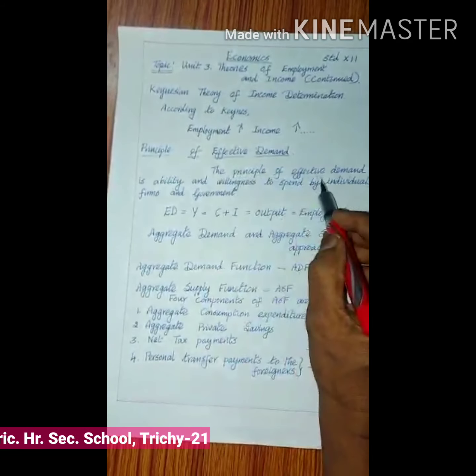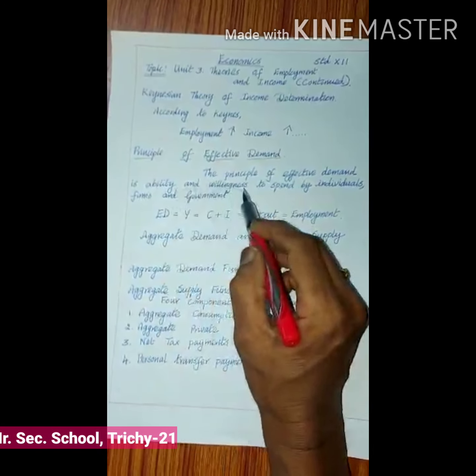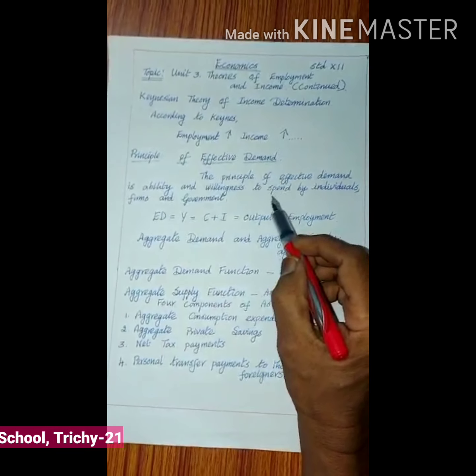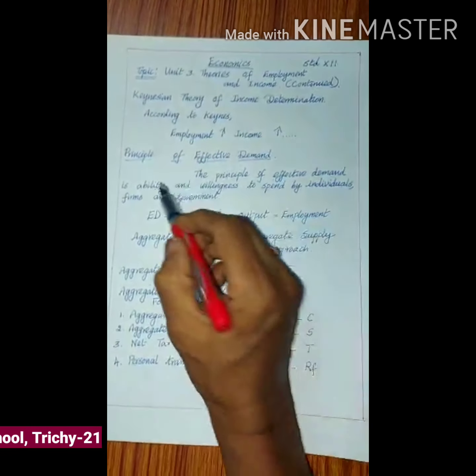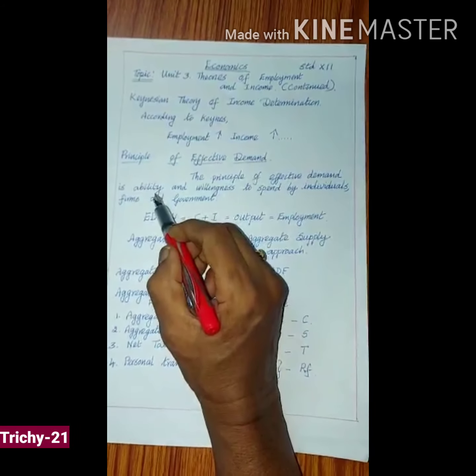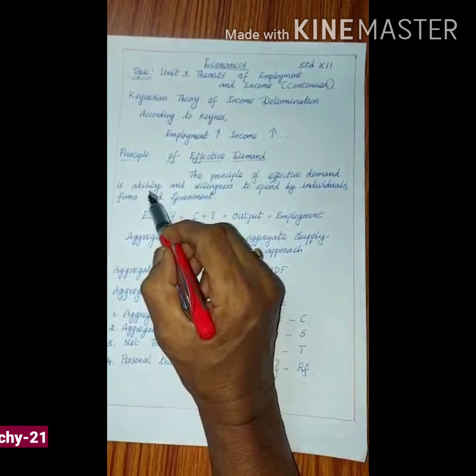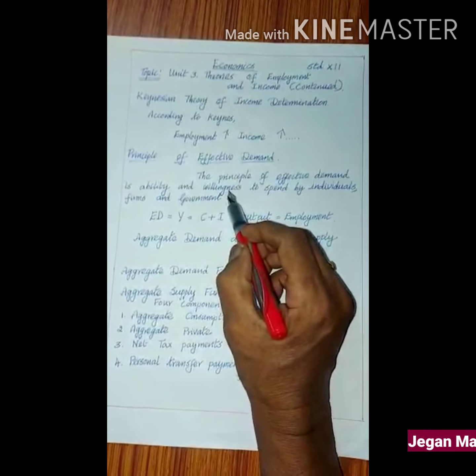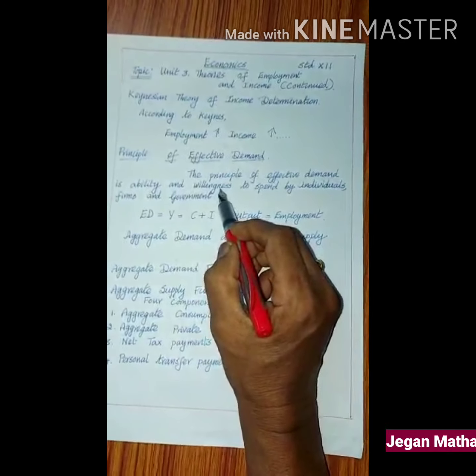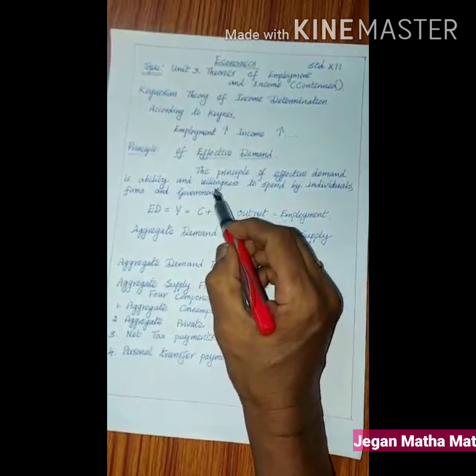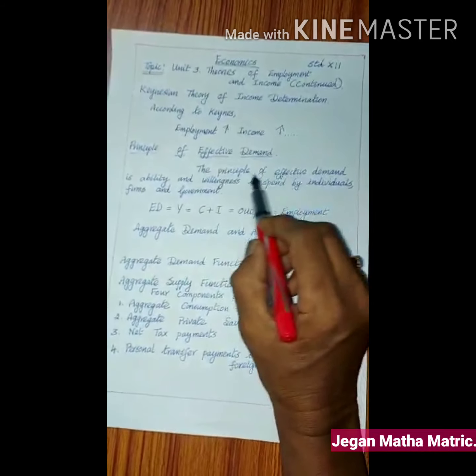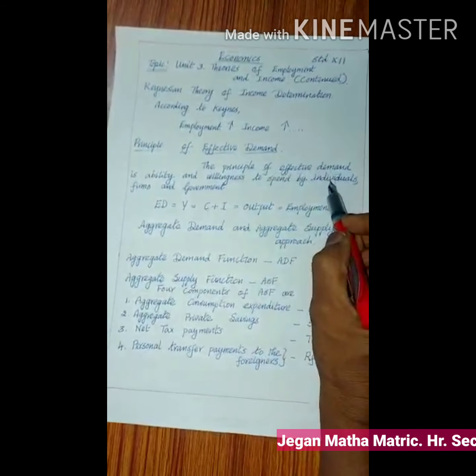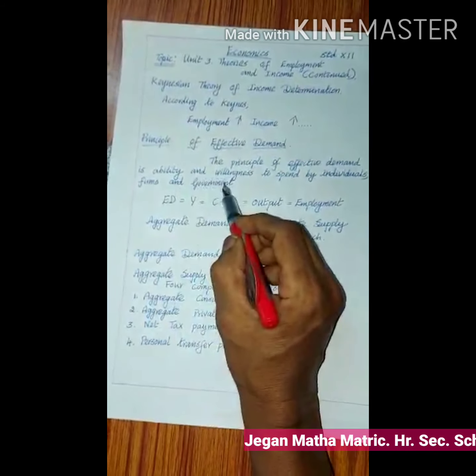The principle of effective demand occupies a key position in his theory. The principle of effective demand is ability and willingness to spend by individuals, firms, and government. Ability means the money that we ought to have, and willingness means even if I have money, I must be willing to spend it.